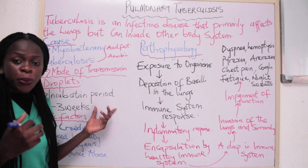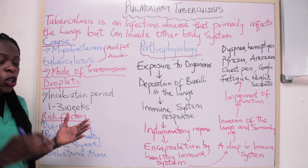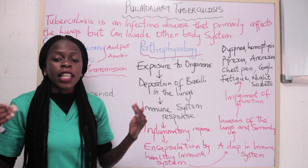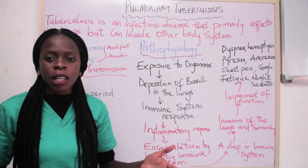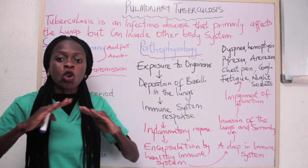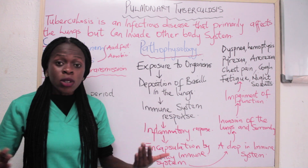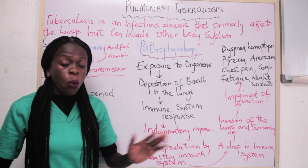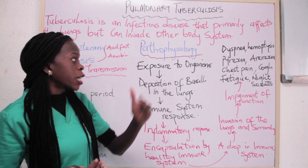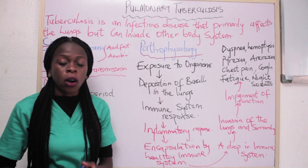The incubation period of pulmonary tuberculosis is usually one to three weeks, depending on how strong the immune system is. Pulmonary tuberculosis can remain dormant after affecting someone if your immune system is strong. We'll be discussing that further in the pathophysiology of pulmonary tuberculosis.